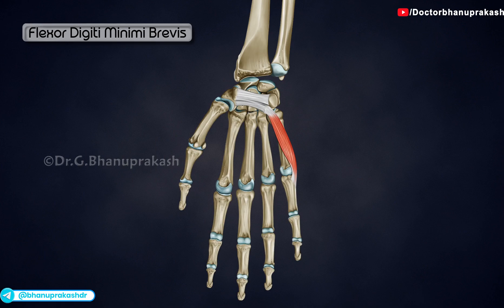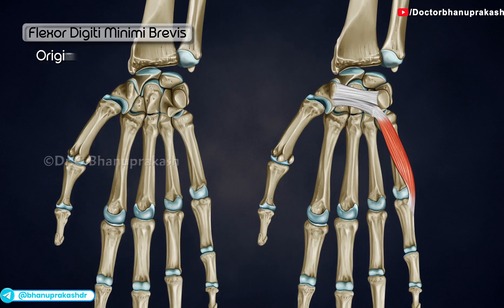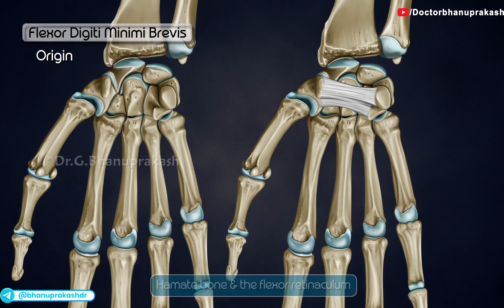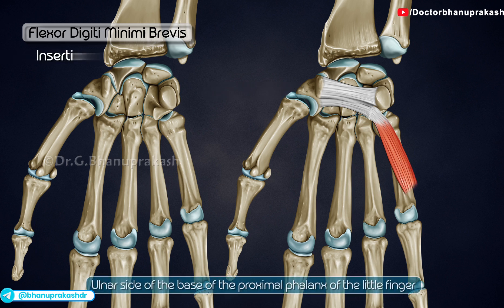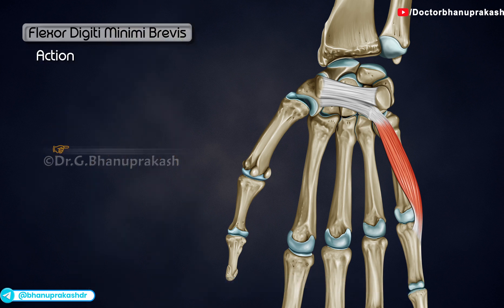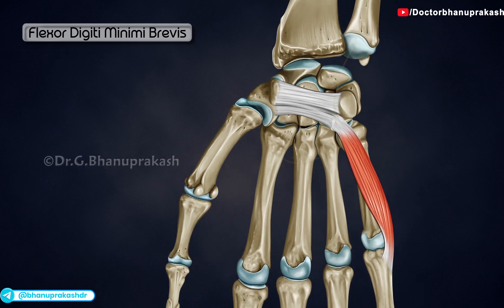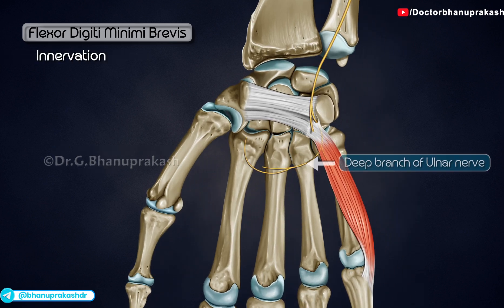Flexor digiti minimi brevis originates at the hamate bone and the flexor retinaculum, and is inserted onto the ulnar side of the base of the proximal phalanx of the little finger. It flexes the metacarpophalangeal joint of digit 5, and is innervated by the deep branch of the ulnar nerve.